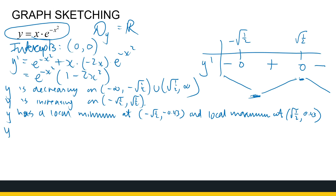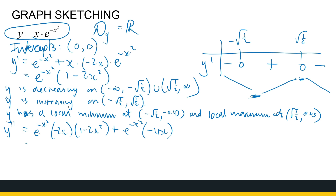The second derivative gives us concavity, so I'll take the derivative of the first derivative. Using the product rule on the factorized version: the derivative of e to the power minus x squared is e to the power minus x squared times minus 2x, multiplied by 1 minus 2x squared, plus e to the power minus x squared times the derivative of 1 minus 2x squared, which is minus 4x. Tidying and factorizing that, you should get e to the power minus x squared times 2x times 2x squared minus 3.